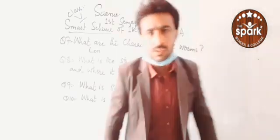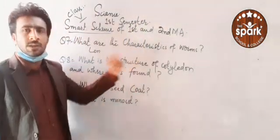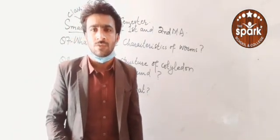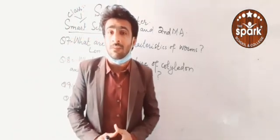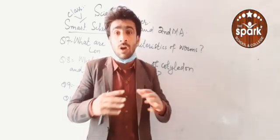So now we are going to discuss question number seven. What are the characteristics of worms? Worms have a long, tube-like body that has no arms or legs.